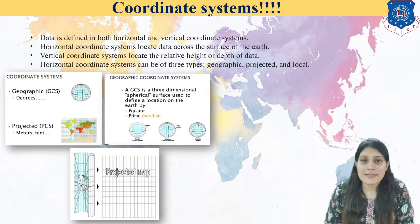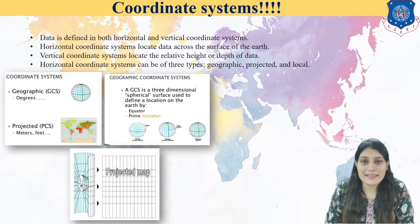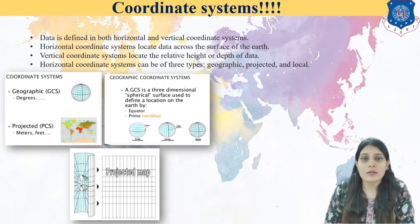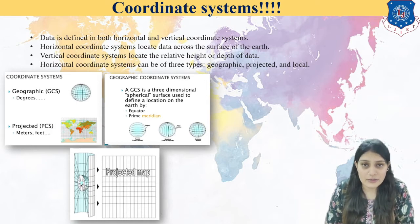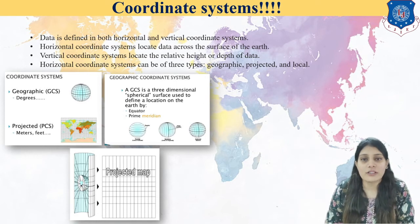Coordinate system basically means data is in horizontal and vertical — that is latitudes and longitudes — and the unit is degrees, minutes, and seconds. Now we are going to provide various coordinate systems. The coordinate system is basically either a geographic coordinate system or a projected coordinate system.